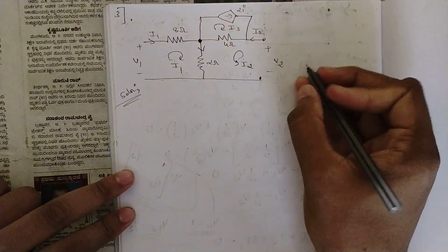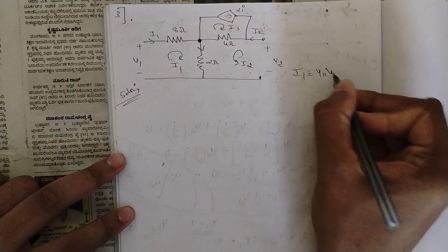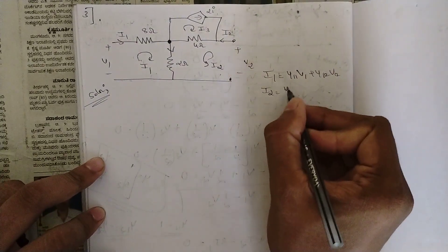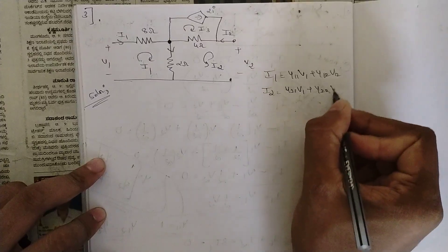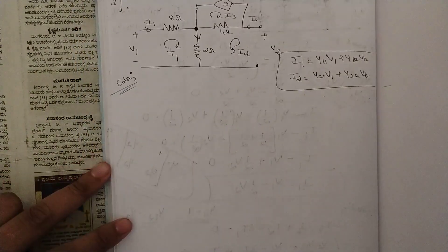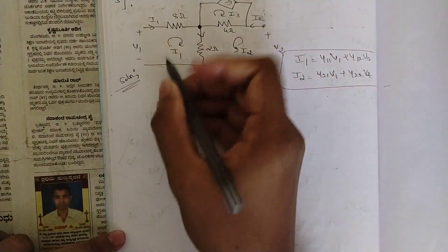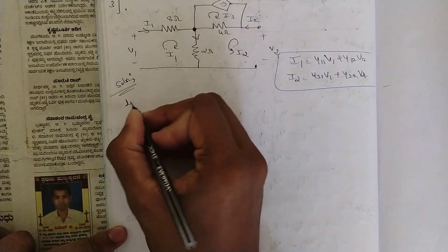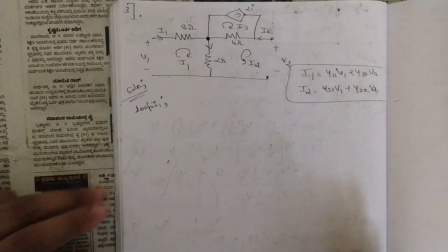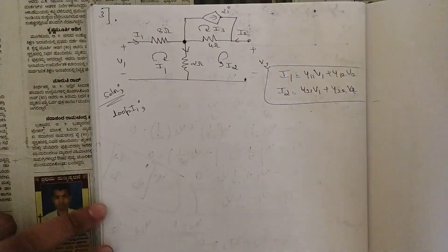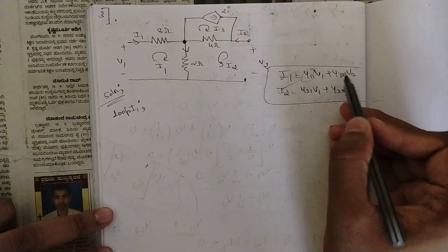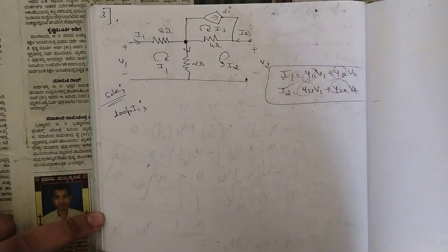First I will write the equations of Y parameters so you won't get confused: i1 = y11·v1 + y12·v2, and i2 = y21·v1 + y22·v2. Now let us start solving. First apply KVL at loop i1 and we should be getting two equations in terms of these parameters.